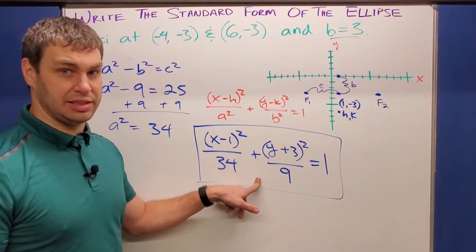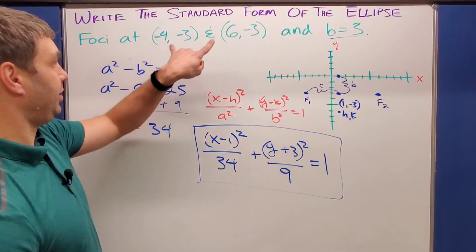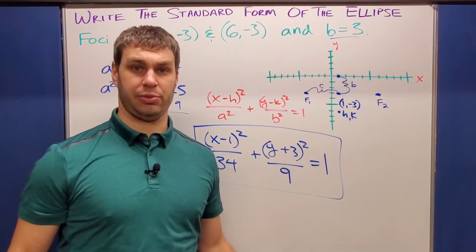and then all ellipses always equal one. So in this box down here is the standard form of this ellipse described by giving these two foci and the B value of three.